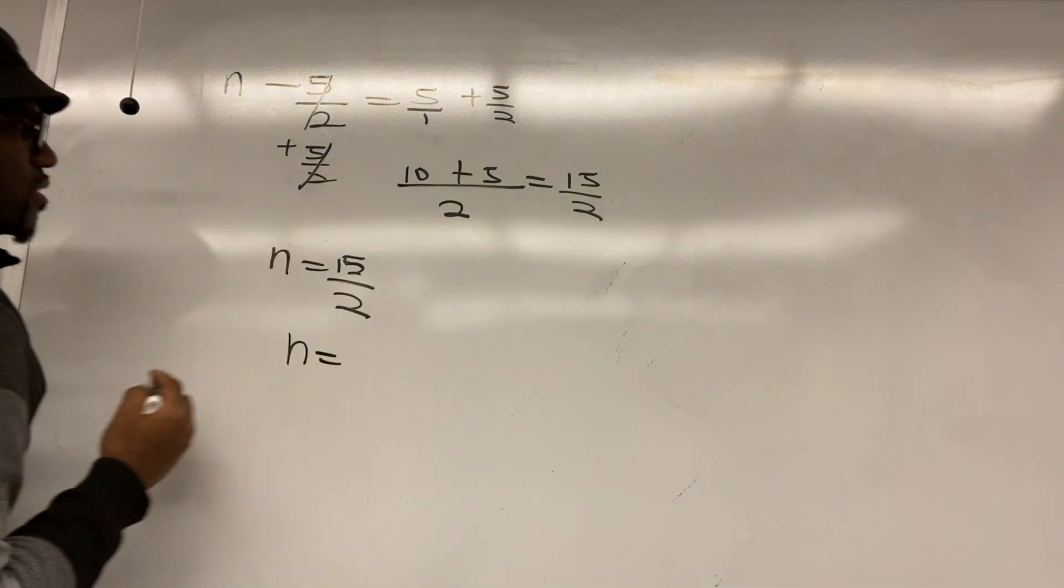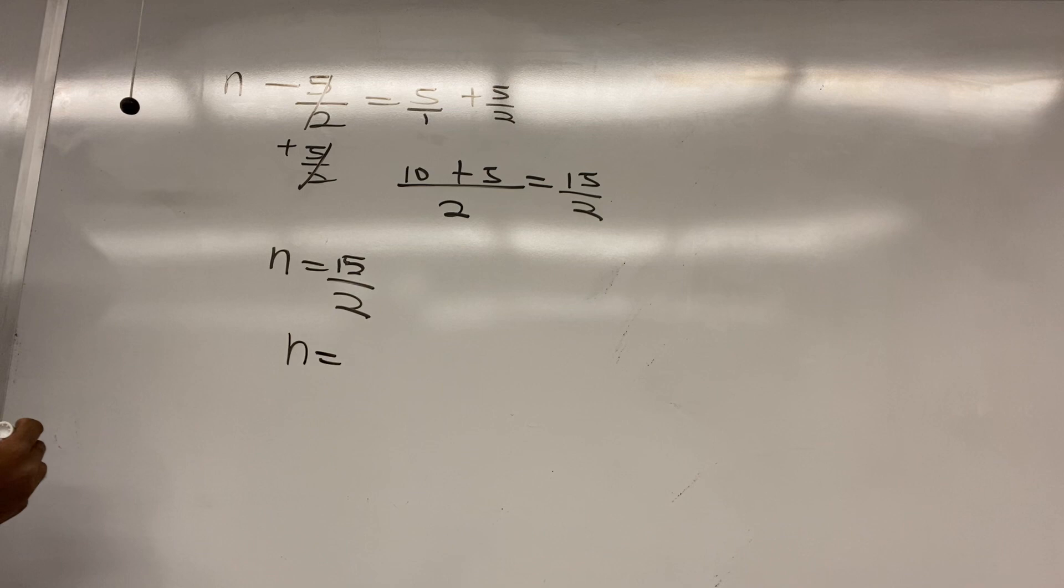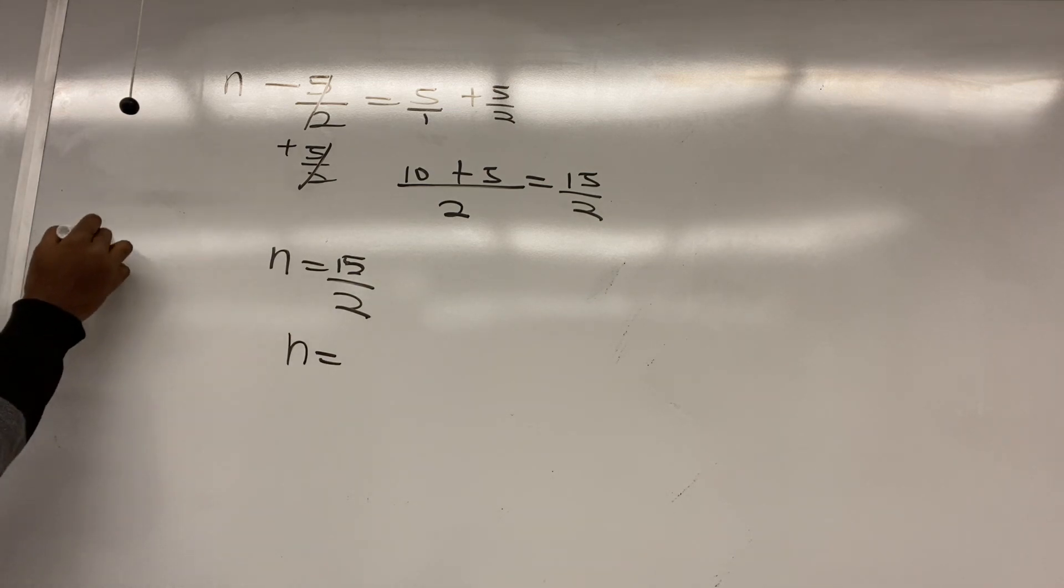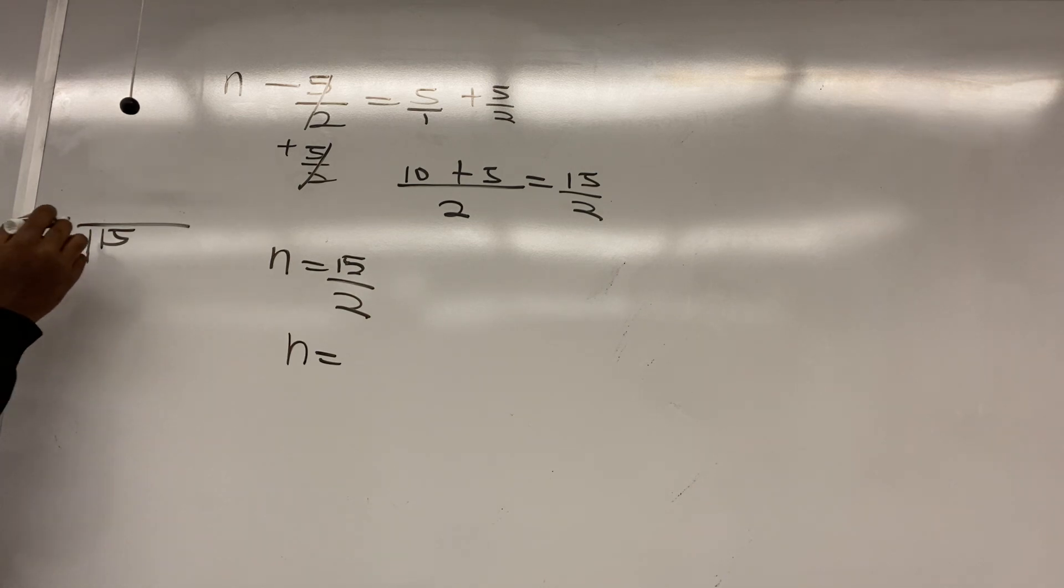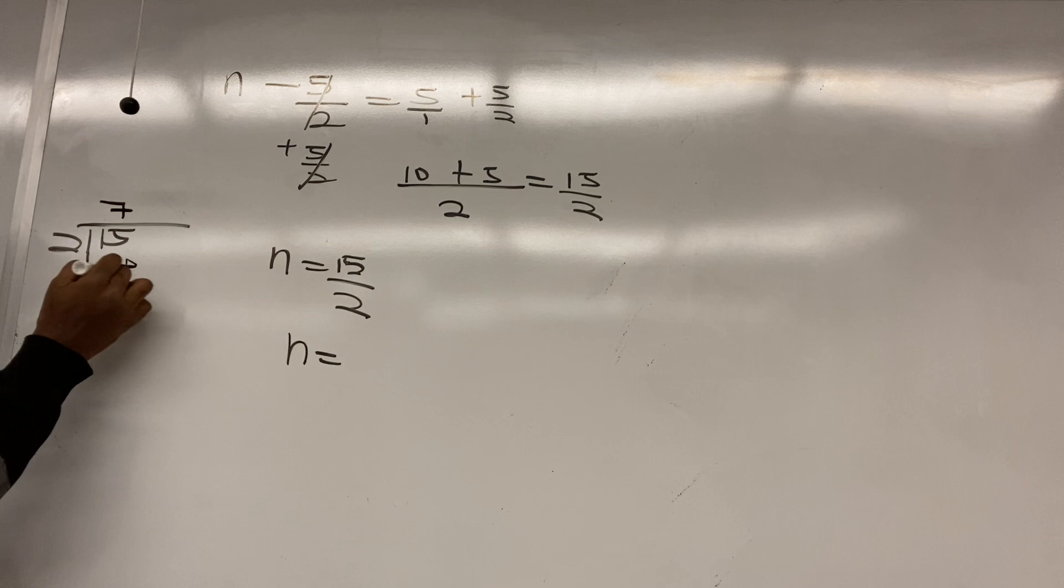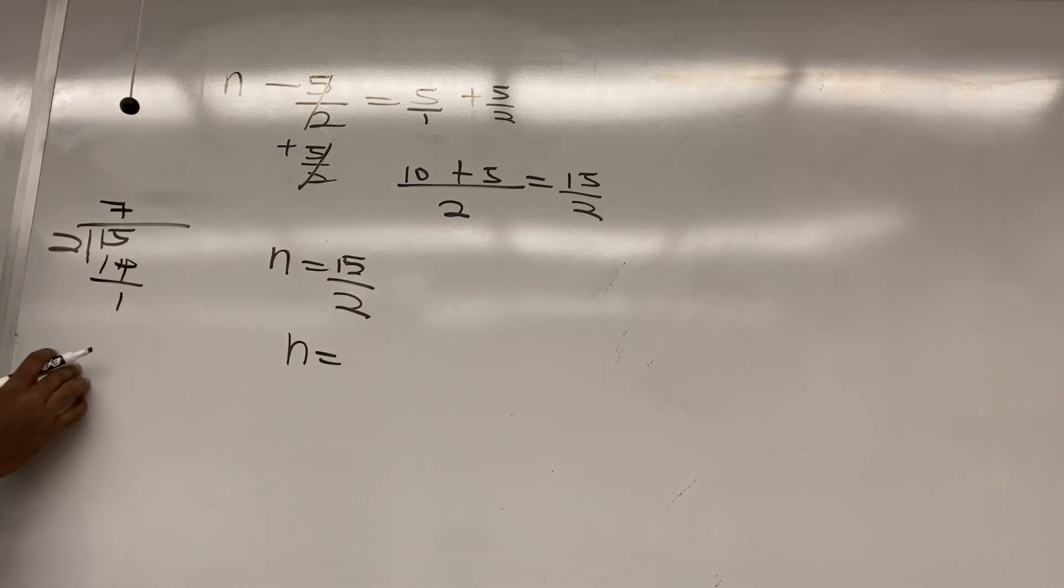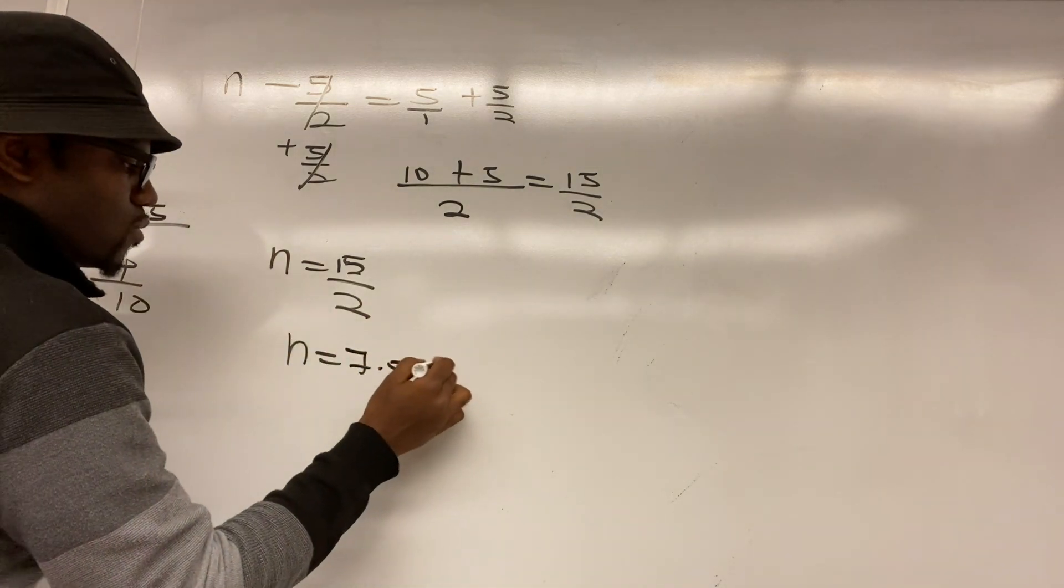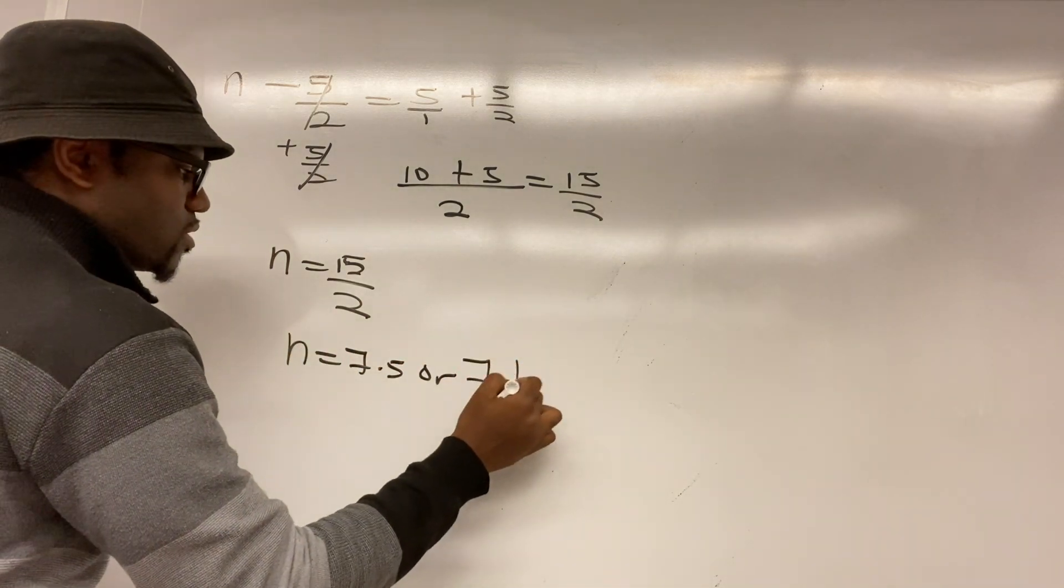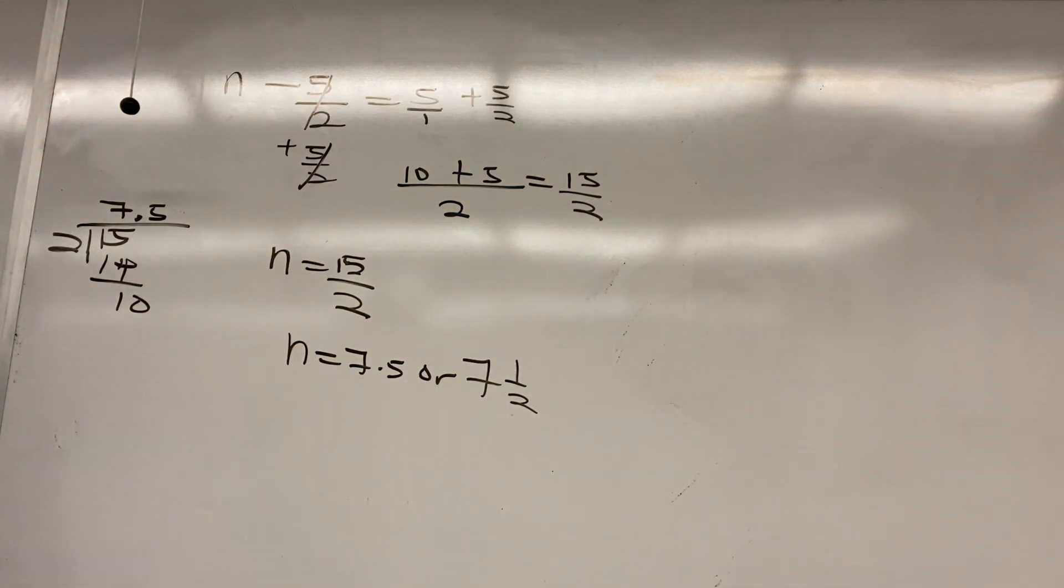So n equals what? N equals, we can say 15 divided by 2. 2 goes to 15 how many times? 2 goes to 15, how many times? 2 goes to 15, 5 times. 5. So n equals 7, 1 to 5, or 7, 1 to 2. Same thing. That's right.